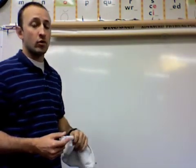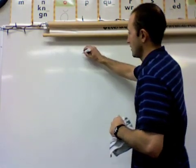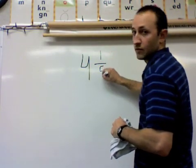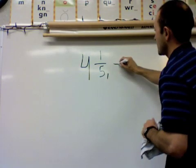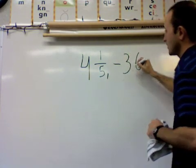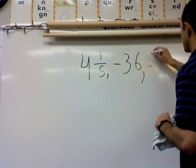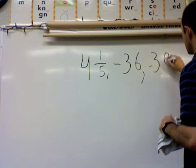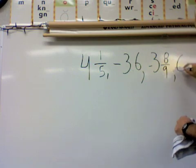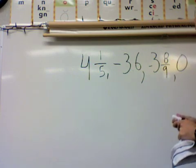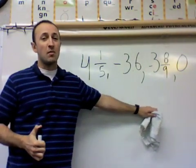So let's take 4 and 1 fifth. And the next number in our series will be a negative 3.6. So I have a mixed number and a decimal. And let's also have another mixed number, negative 3 and 8 ninths. And finally our last integer will be a 0. So now what I want to do is take all of these numbers and I want to make them alike.